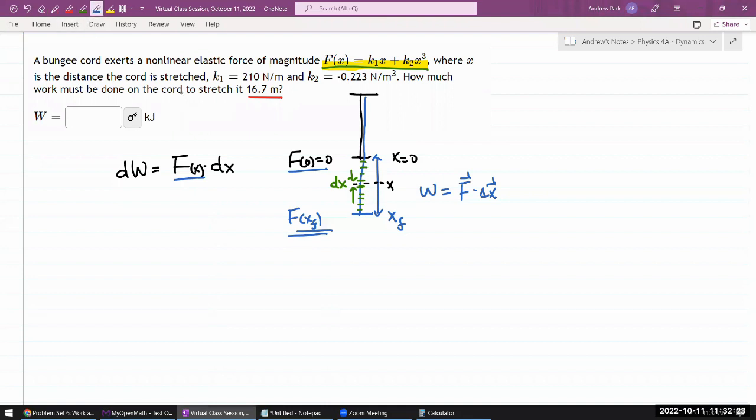So we get the total amount of work done over the entire interval from x equals zero to x final by integrating from x equals zero to x final. So this is going to be our formula for us to calculate. Let me write out the explicit form. So dx is going from zero, because that's where we are starting, to x final that we have a value of. And the expression for force comes from here, k1 times x plus k2 times the same x to the third power times dx.